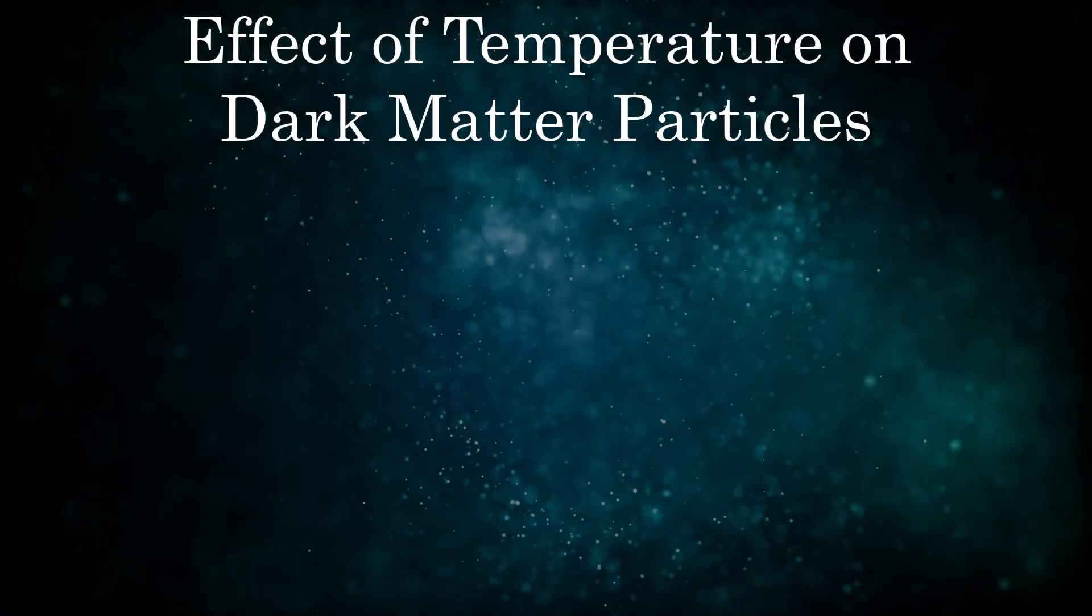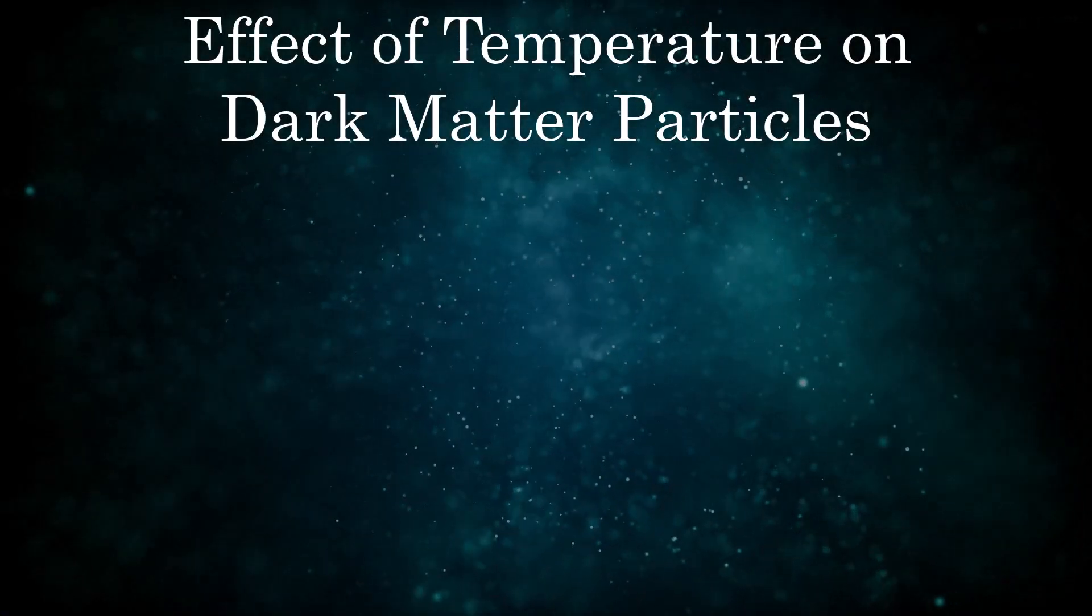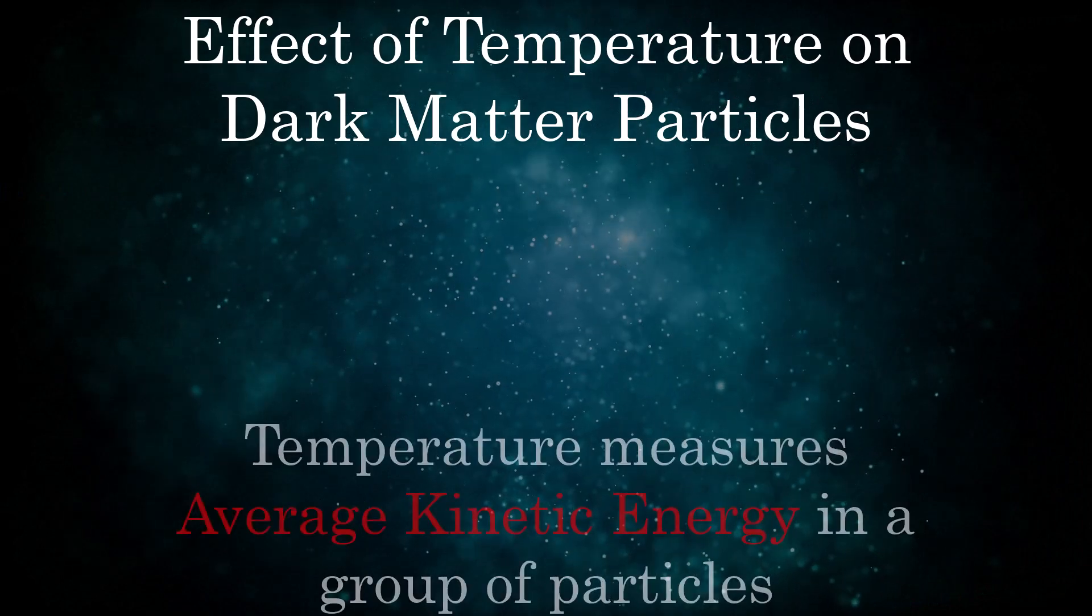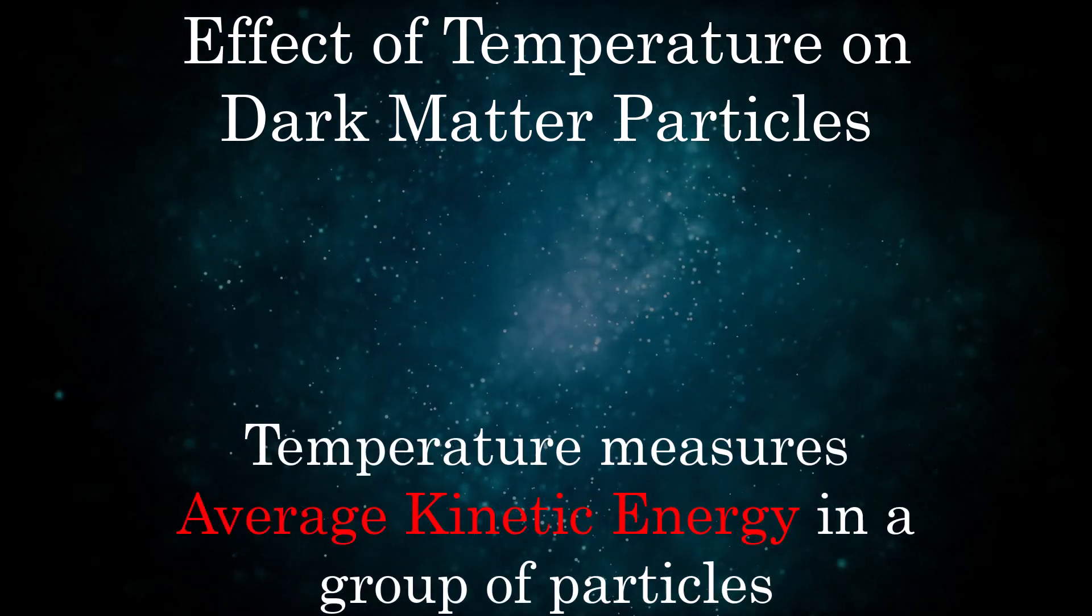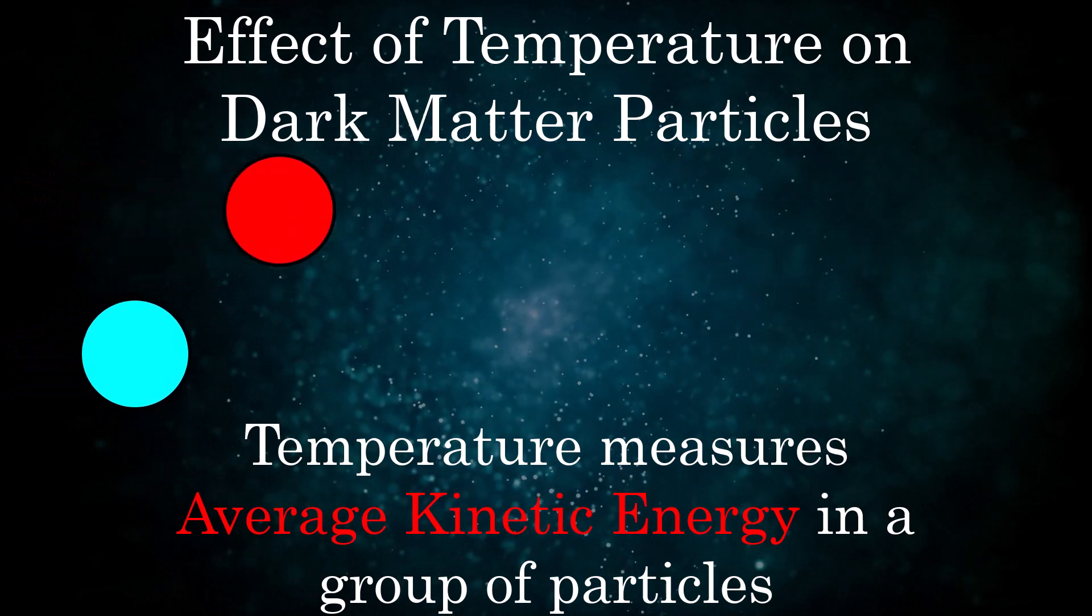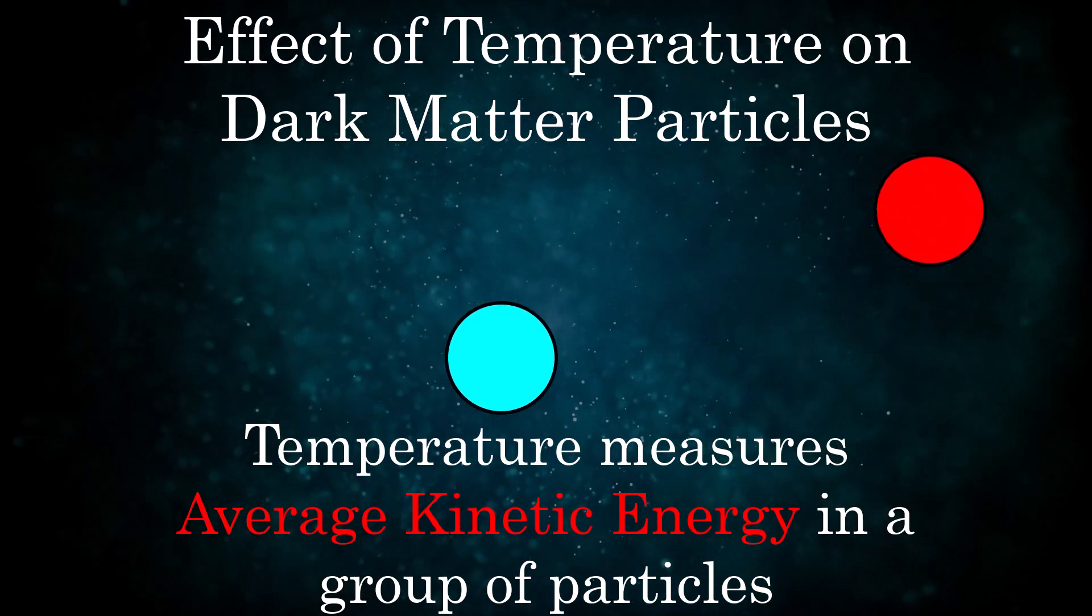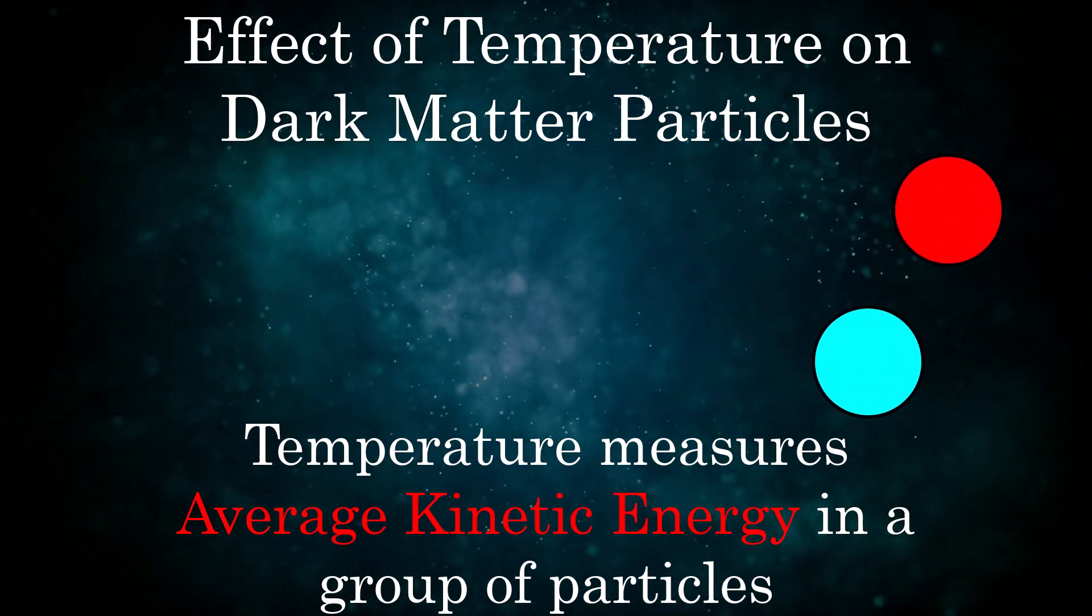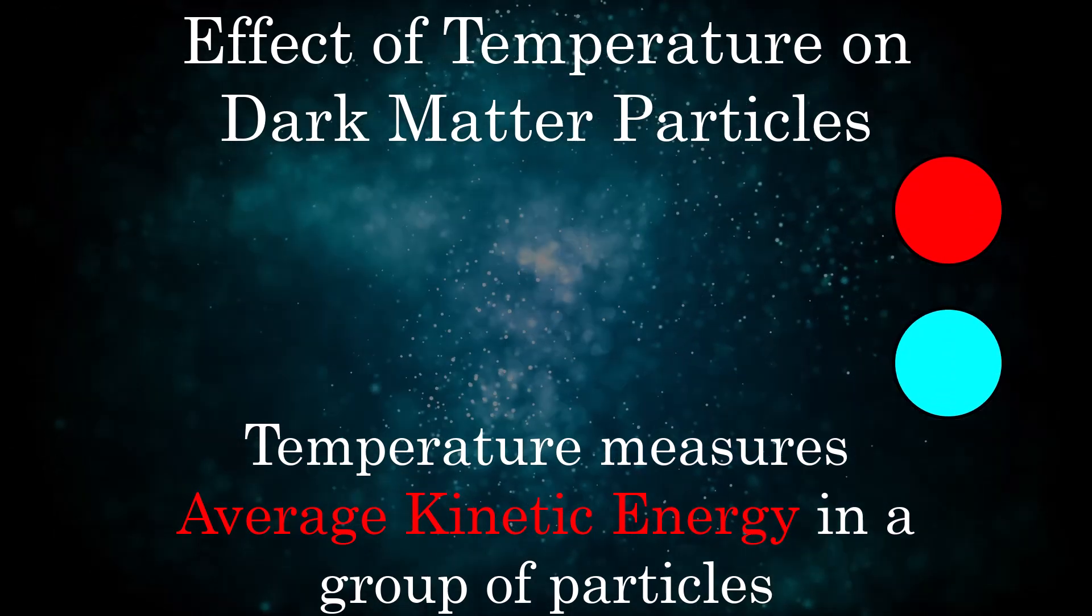Now let's discuss how this is affected by the temperature of the dark matter. Temperature is the measure of average kinetic energy of particles, so a good way to think about this is that a hot dark matter has particles moving faster on average than a cold dark matter. With this in mind, let's think what would happen if the dark matter in the universe were hot.